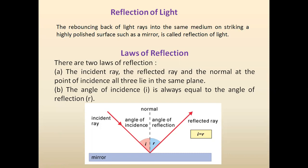There are two laws of reflection of light. The first law states that the incident ray, the reflected ray, and the normal at the point of incidence all lie in the same plane.